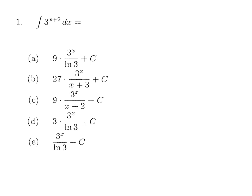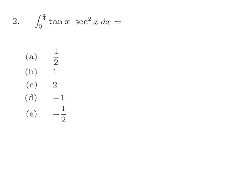For question 1, you can split 3 to the power x+2 by factoring out 3 squared. Then you write the anti-derivative of 3^x, which is 3^x over ln(3). So part A is the answer.